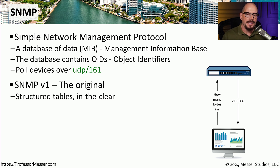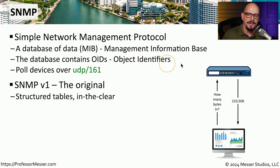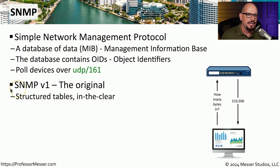When configuring SNMP on your network management station, it may ask which version of SNMP that device is using. There are usually three different versions to choose from. The first is the original version, SNMP version 1. This provided a way to query structured tables stored within the Management Information Base, but it sent all of that information across the network in the clear — there was no encryption associated with any transmission using SNMP version 1.